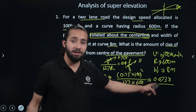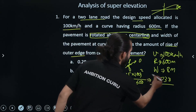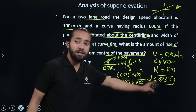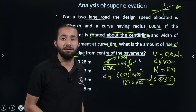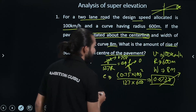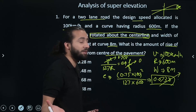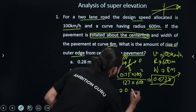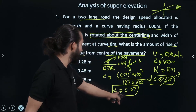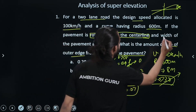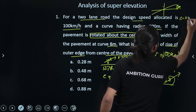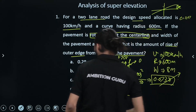The value of E came out to be 0.0738. However, the maximum allowable value of E is 0.07. Since the calculated value exceeds the maximum, we take E as the maximum value of 0.07.